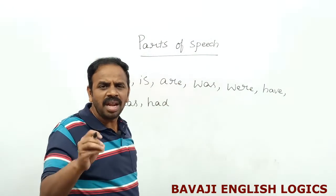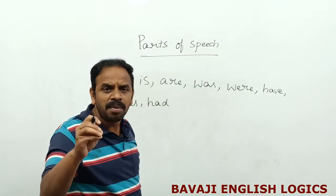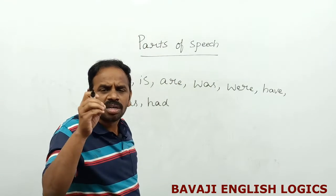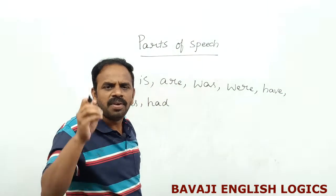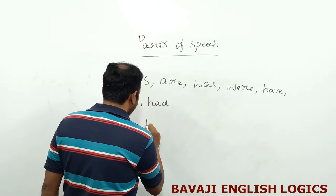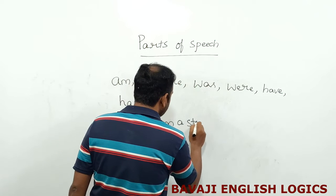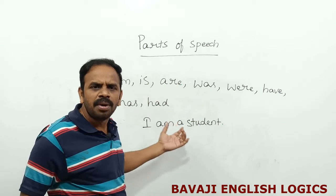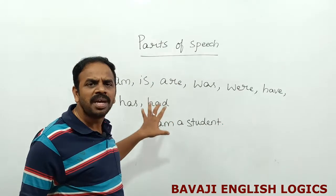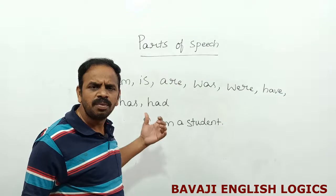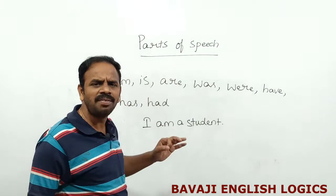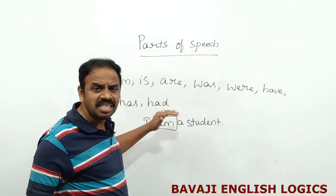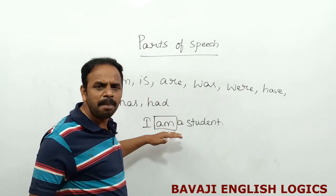That means in sentences where there is no main verb, the auxiliary verb acts as the main verb — because we cannot write a sentence without a verb. For example, 'I am a student.' Do we find any main verb in this sentence? Absolutely no. So the auxiliary verb am acts as the main verb in this sentence.